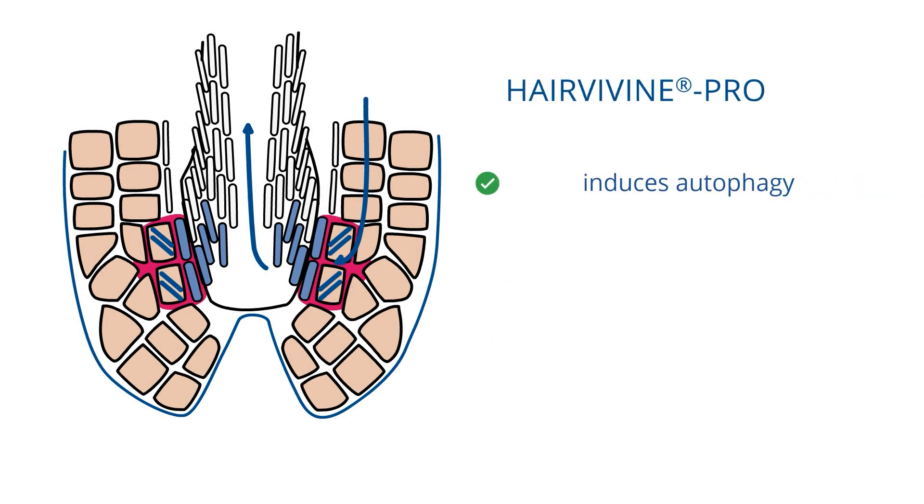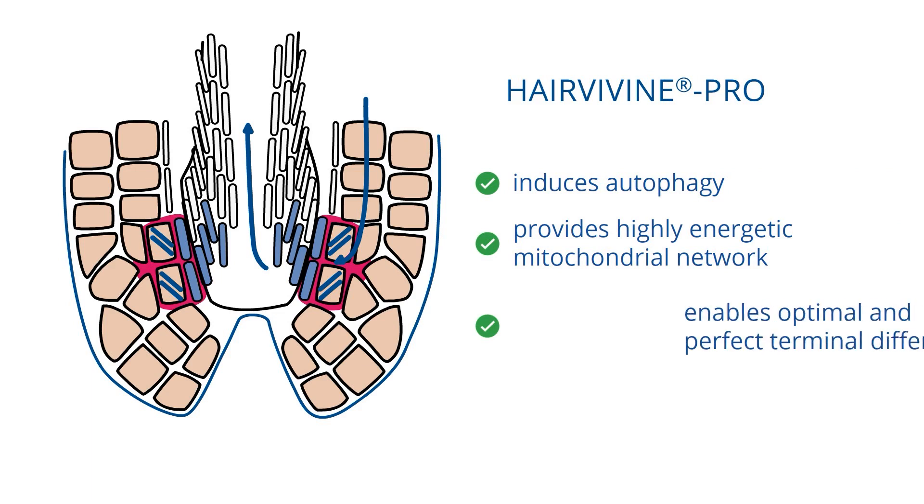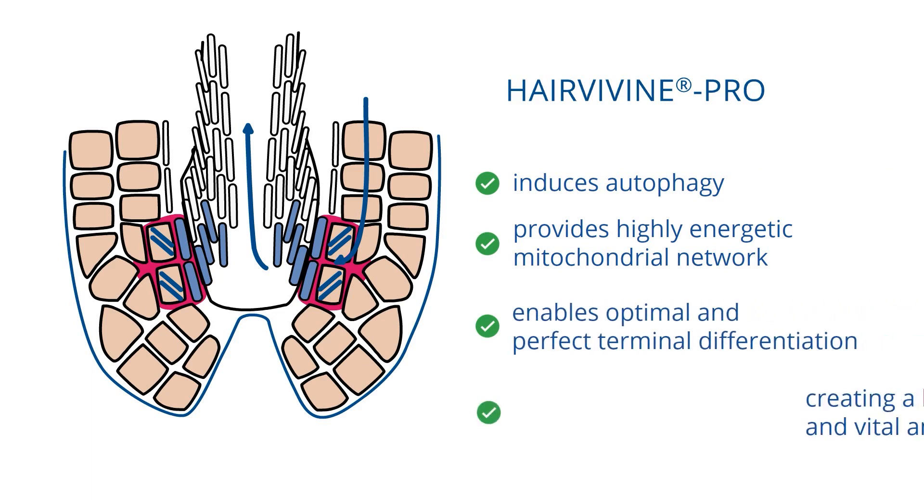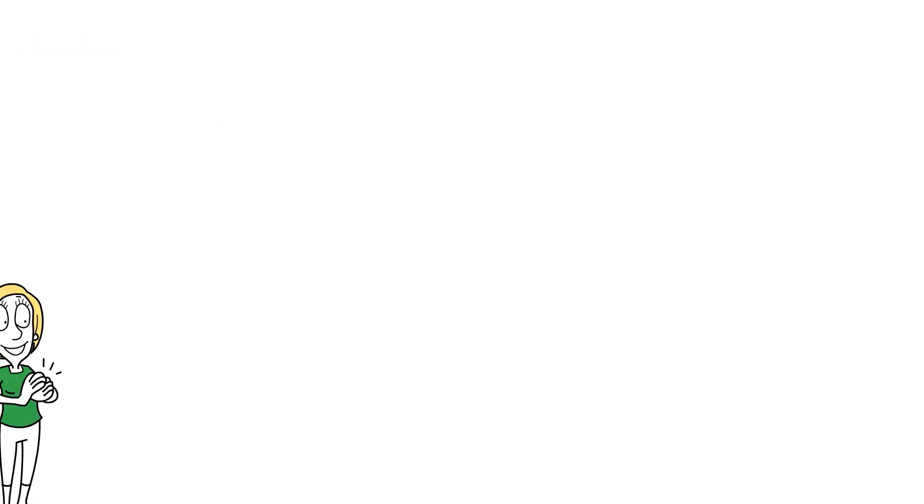Hair Rewind Pro introduces autophagy and provides highly energetic mitochondrial network. It enables optimal and perfect terminal differentiation, creating a healthy skin barrier and vital and strong hair.